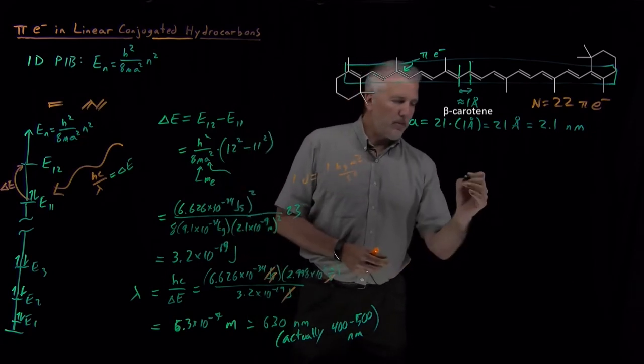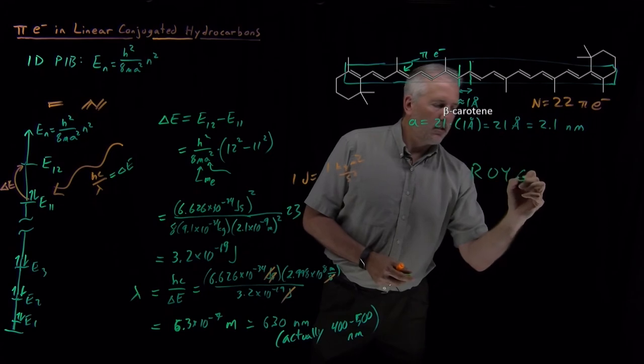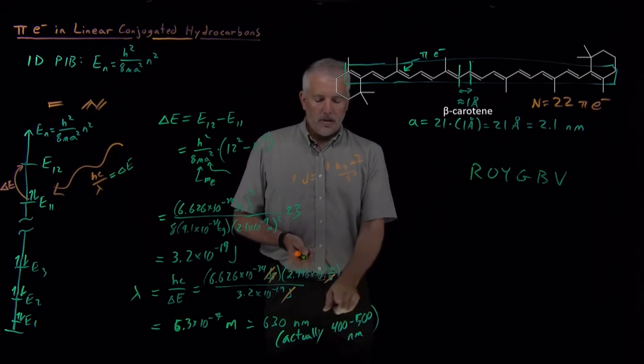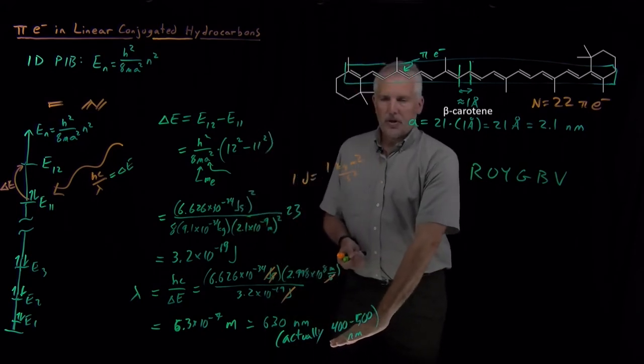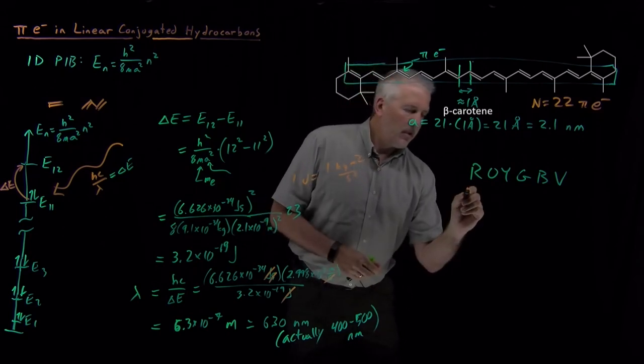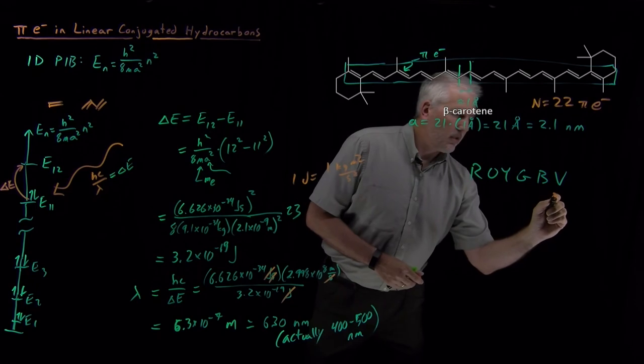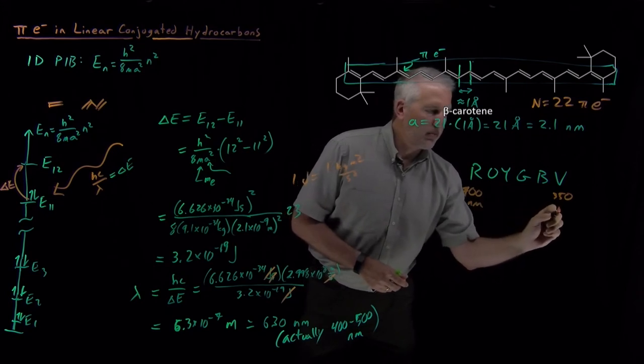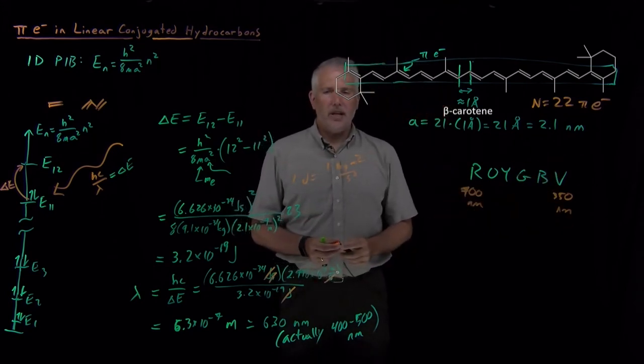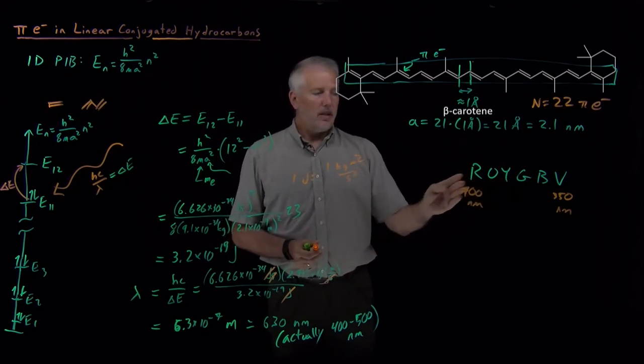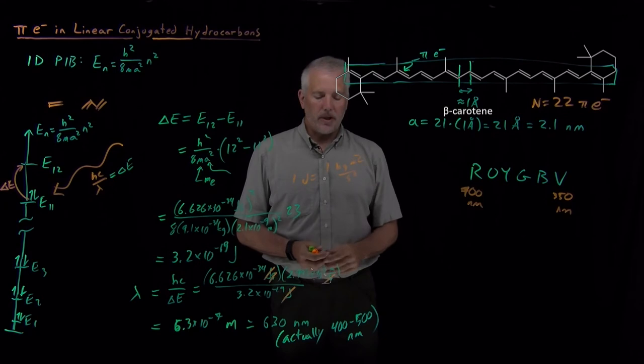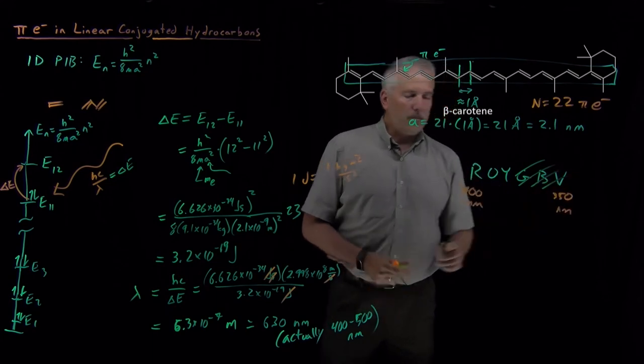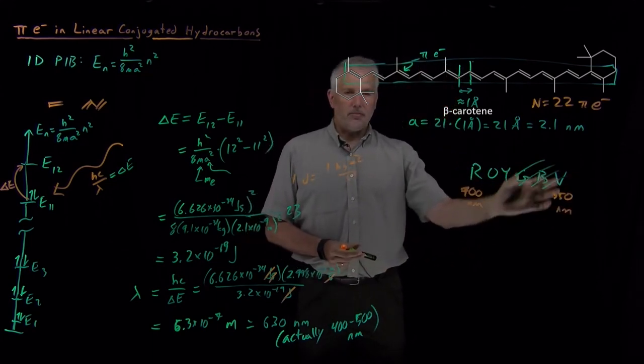If we want to think a little further about the color of beta carotene, if the molecule actually absorbs light of 400 to 500 nanometers, the visible spectrum extends from about 400 nanometers on the violet end up to about 700 nanometers on the red end. So if it's absorbing light in the 400 to 500 nanometer portion of the spectrum, that's in the green-blue-violet portion of the spectrum.